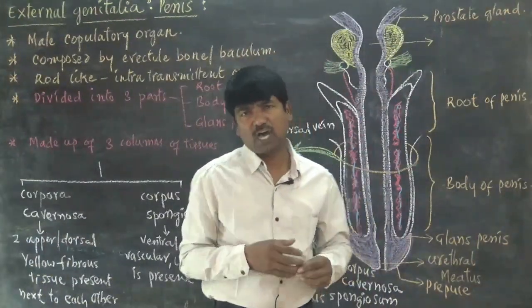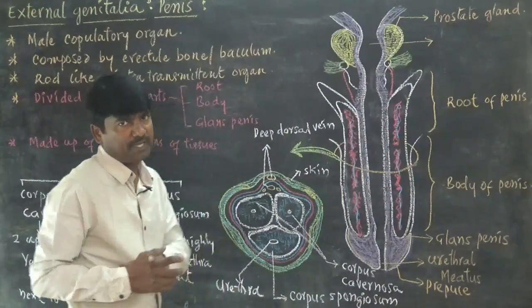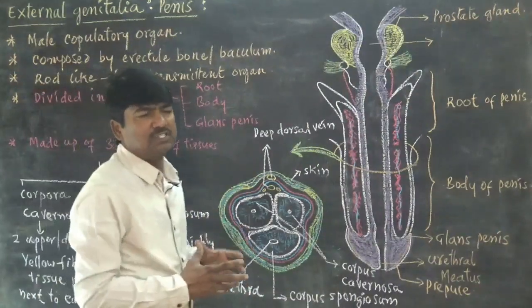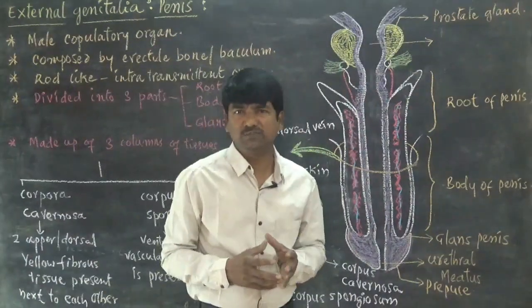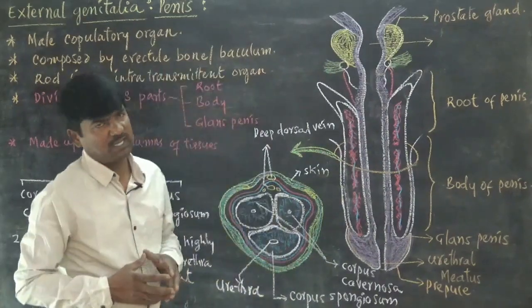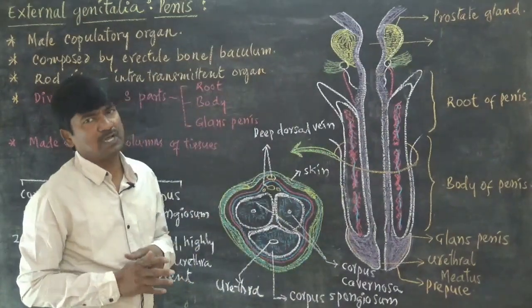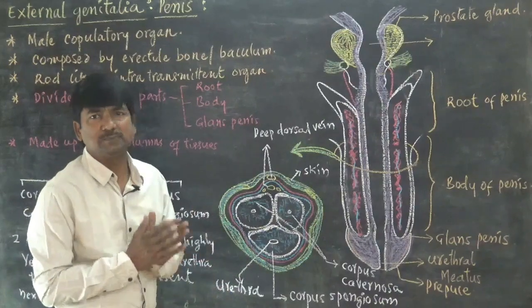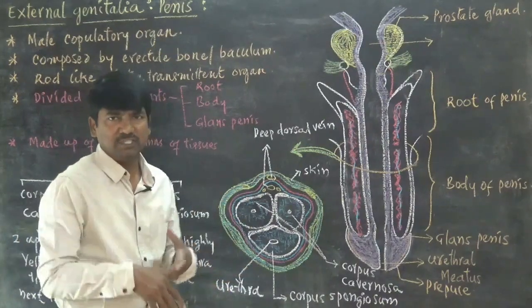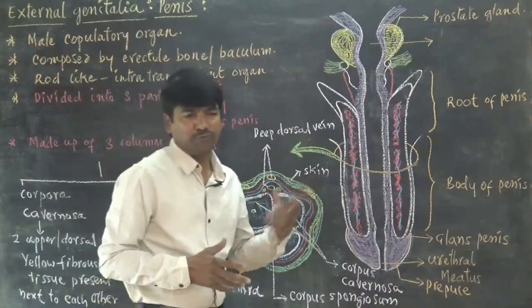In the middle part of the corpus spongiosum, there is an opening. That opening is known as urethra. Urethra generally passes the urea as well as semen. During the copulation process, the urethra passes the sperms into the vagina by the movement of penis within the vagina.